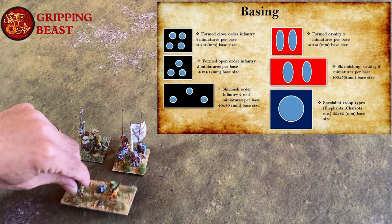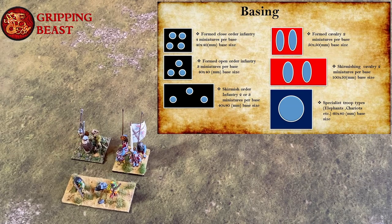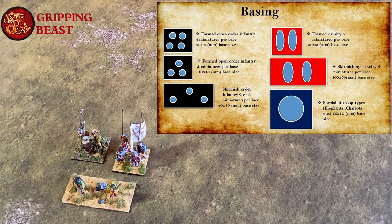Skirmish order infantry will normally have two or three models per base and the base size will be 40mm by 80mm.